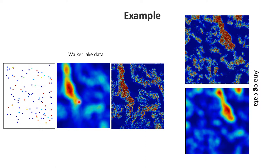You may have noticed the difficulty in calculating variograms, in particular when we're dealing with very few data and where the data is very skewed. This is the issue that we have when we did sequential Gaussian simulation or kriging with just one variable. If we have more variables, this becomes even more difficult.